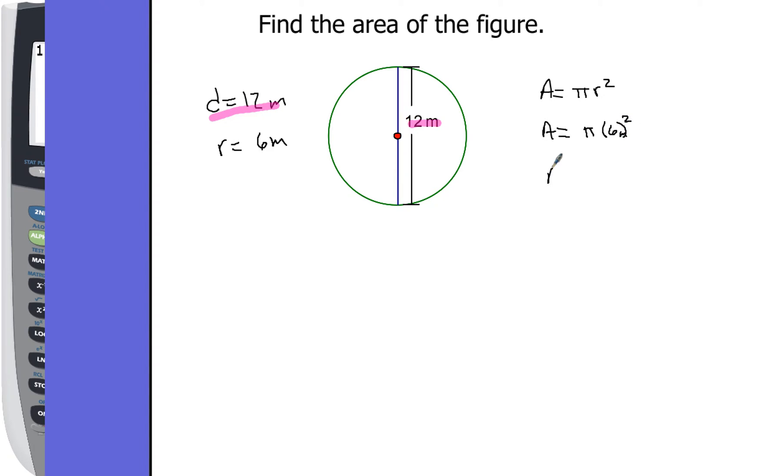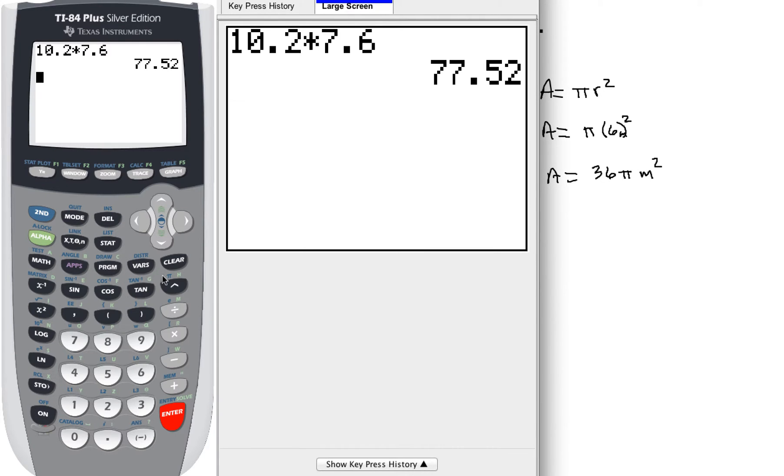And then, when we square that, our exact answer is going to be 36 pi square meters. Now, that's our exact answer. Sometimes you want an approximation, so when you do that, there's a couple different ways you can do that. One of them is you can just do 36 times, sometimes people will use 3.14 as an abbreviation. A lot of standardized tests will allow you to do that. And if you work with that, you'll come up with 113.04.